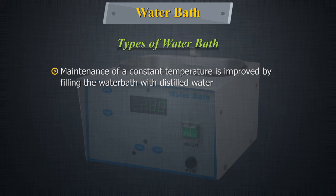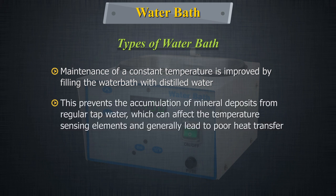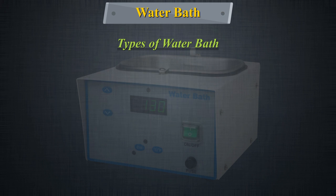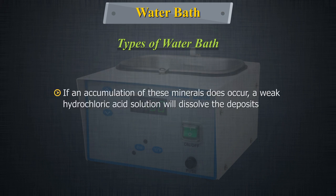Maintenance of a constant temperature is improved by filling the water bath with distilled water. This prevents the accumulation of mineral deposits from regular tap water, which can affect the temperature sensing elements and generally lead to poor heat transfer. However, if an accumulation of these minerals occurs, a weak hydrochloric acid solution will dissolve the deposits.